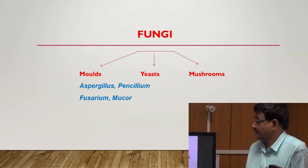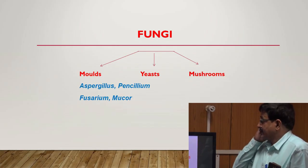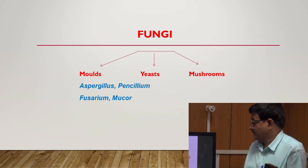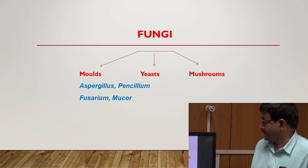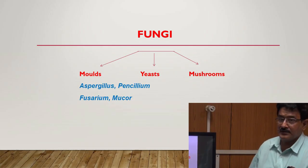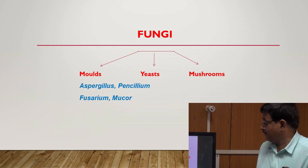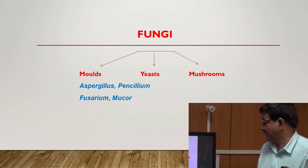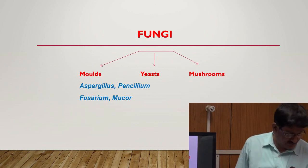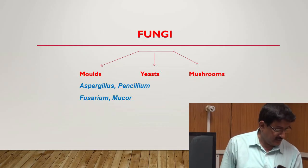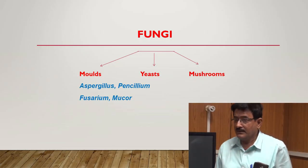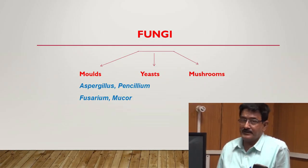Fungi are divided into three groups: number one mold, number two yeast, and number three mushroom. Mold is present in species such as Aspergillus, Penicillium, Fusarium, and Mucor. The rest I will discuss in another class. Bacteria and fungi are different types; fungi are present in soil and I will discuss further in the next class. Thank you.